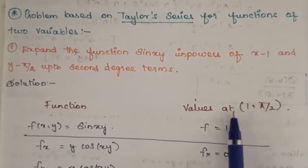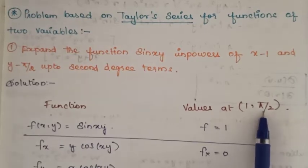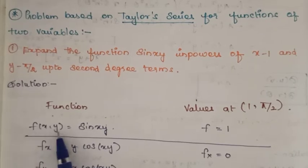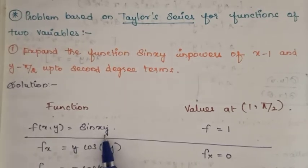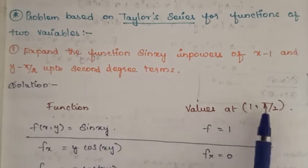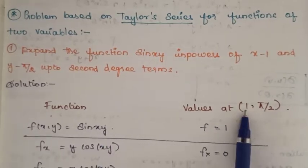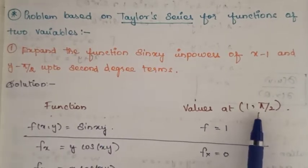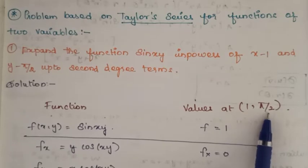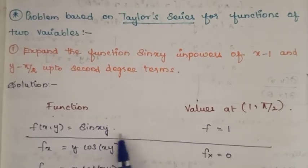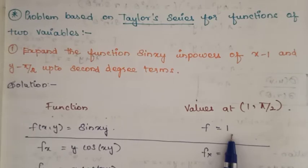So first find f(a, b) = f(1, π/2). Substitute x = 1 and y = π/2 into the function sin(xy): sin(1 × π/2) = sin(π/2) = 1.